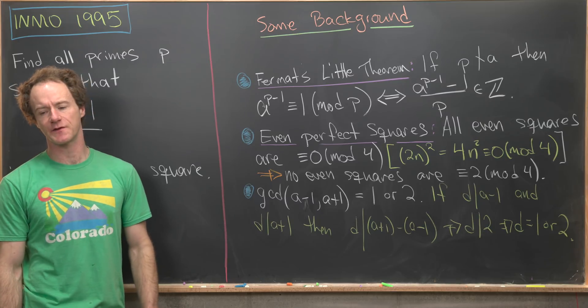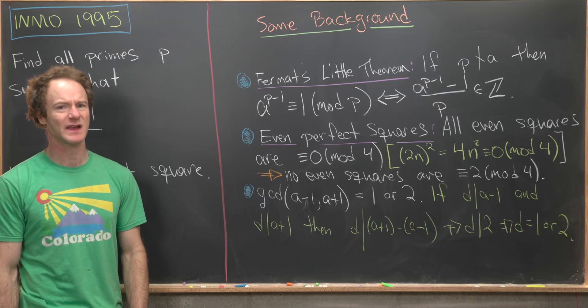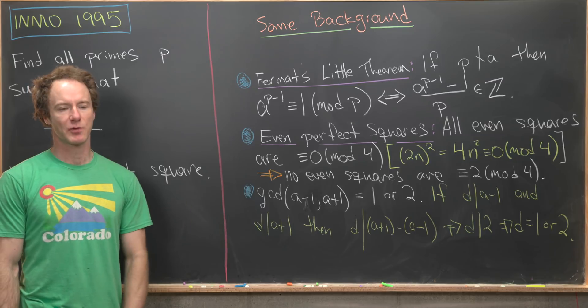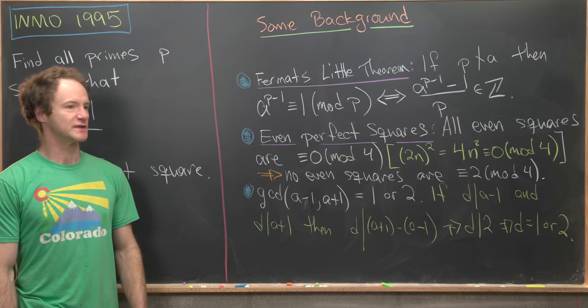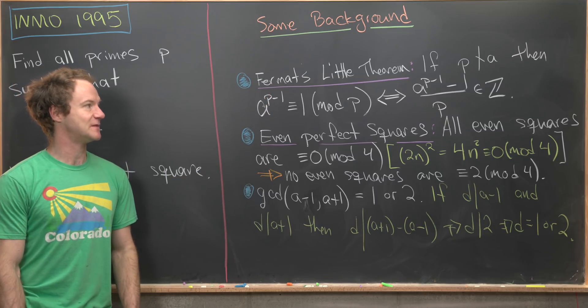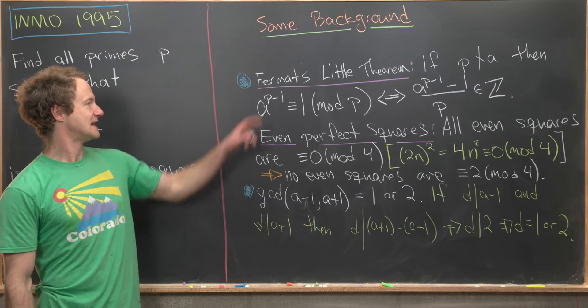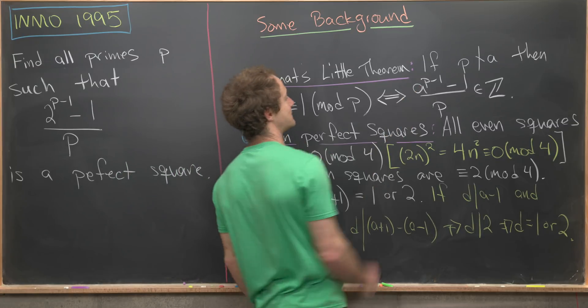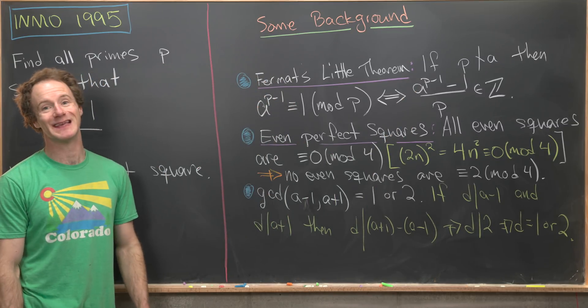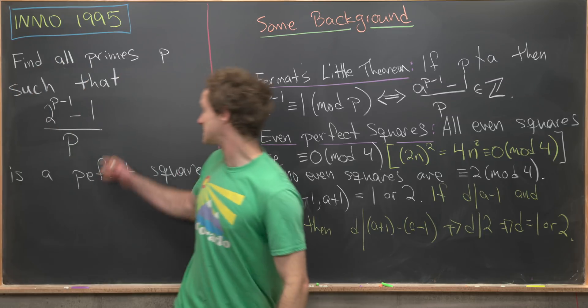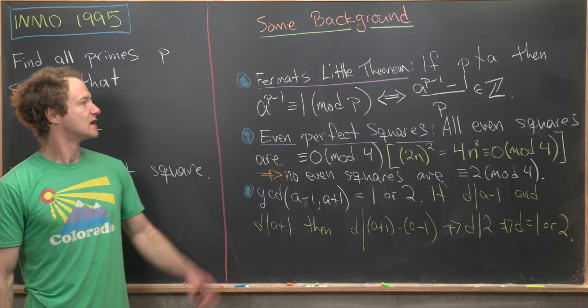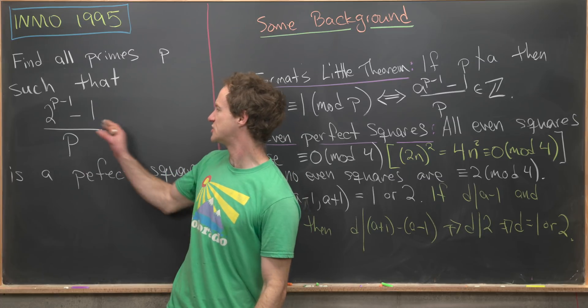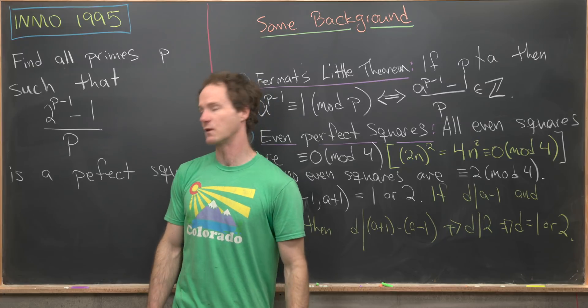The first is called Fermat's Little Theorem. This isn't really required for the problem, but it really motivates why we can talk about this as being a perfect square in the first place, because generally perfect squares, that word is reserved for integers. Fermat's Little Theorem says if p does not divide a, then a^(p-1) ≡ 1 (mod p), which is equivalent to saying that (a^(p-1) - 1)/p is an integer. Notice that's exactly the setup that we have over here with a equals 2.